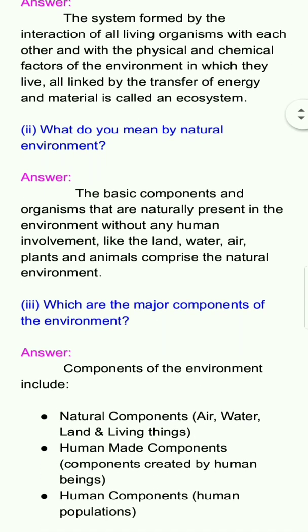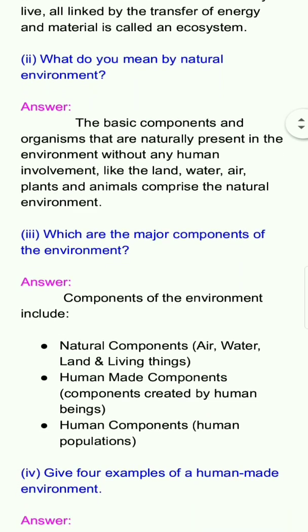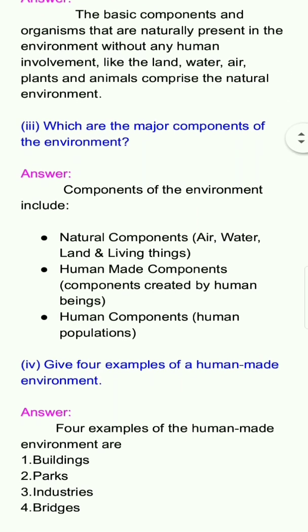Question number 3: What are the major components of the environment? Answer: Components of the environment include — first, natural components: water, land and living things; second, human-made components: components created by human beings; third, human components: human populations.